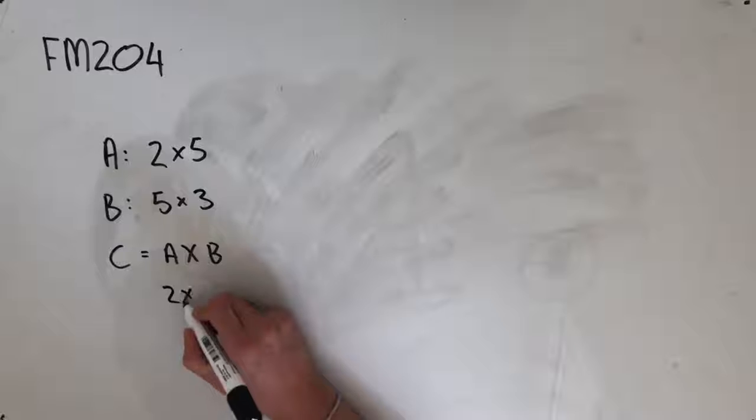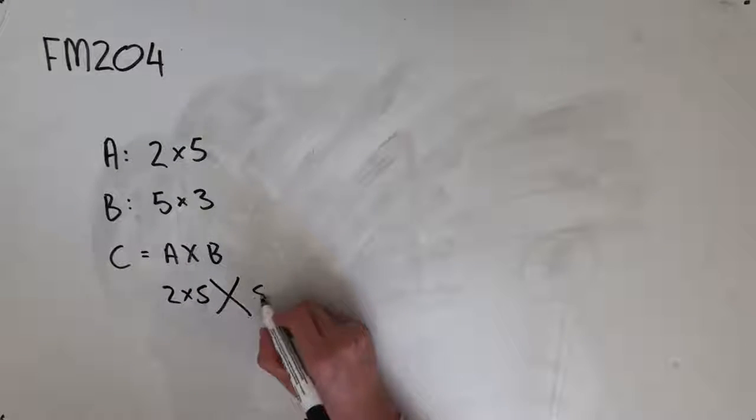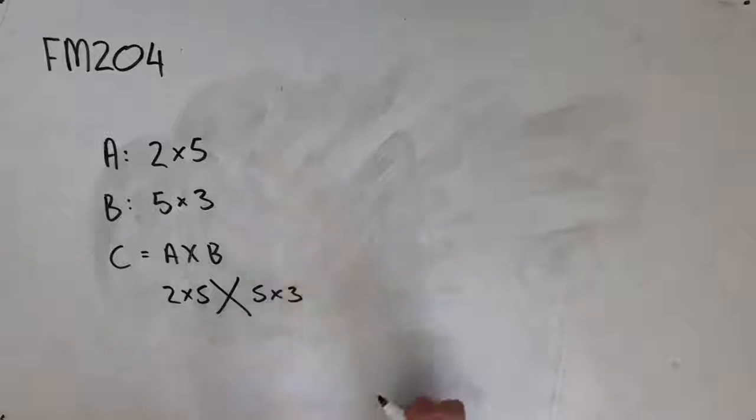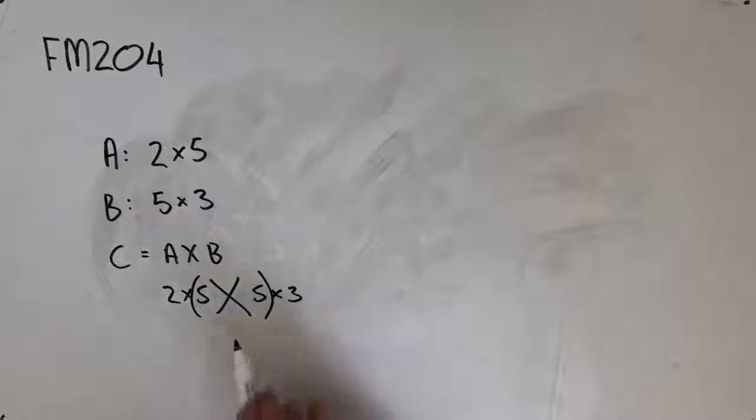So A is a two by five being multiplied by B, which is a five by three matrix. We know that it's defined because the number of columns in matrix A is lining up with the number of rows in matrix B. And the way that I like to do this personally is I kind of bracket in like that.